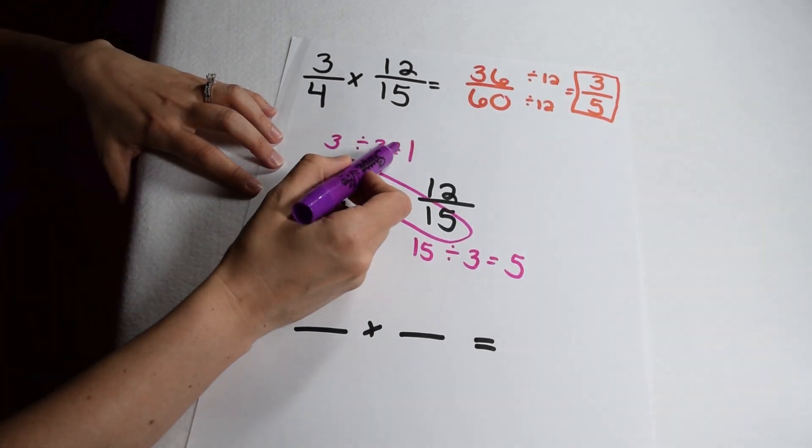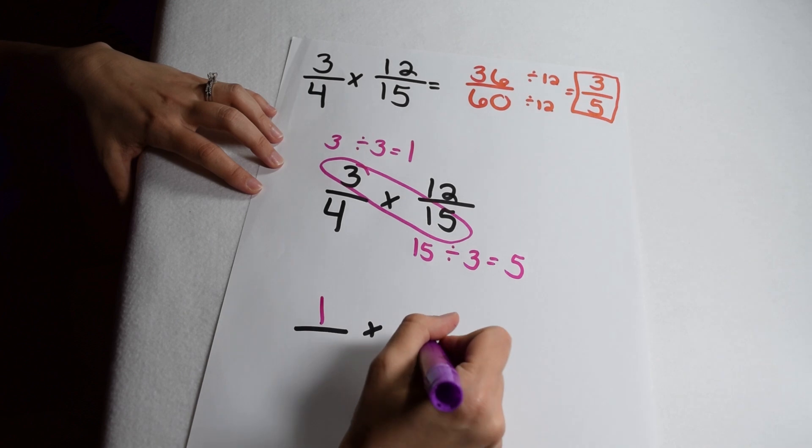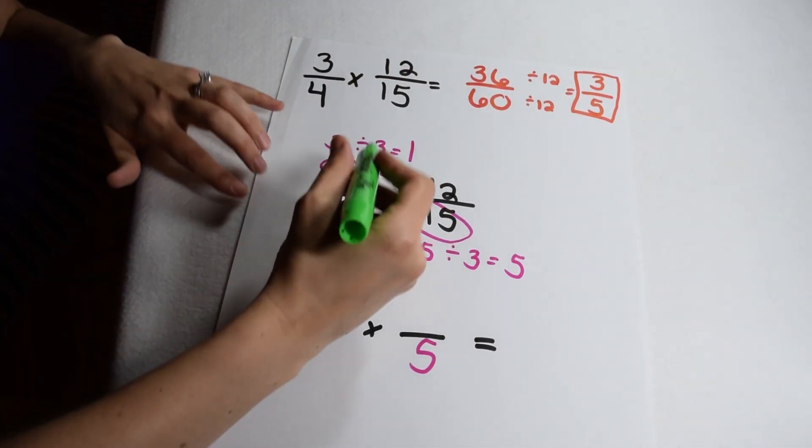Now, instead of using 3 and 15 in my problem, I can use 1 and 5 because I've already simplified.